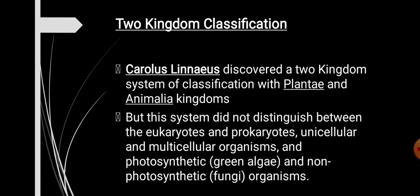However, this system did not distinguish between eukaryotes and prokaryotes. Prokaryotes are organisms that have a primitive nucleus in which the genetic material is not enclosed within a nuclear membrane, and they lack membrane-bound organelles. Eukaryotes are organisms which have a true nucleus in which the genetic material is enclosed within a nuclear membrane, and they do have membrane-bound organelles.